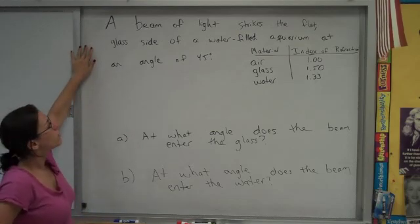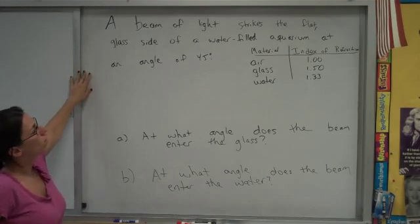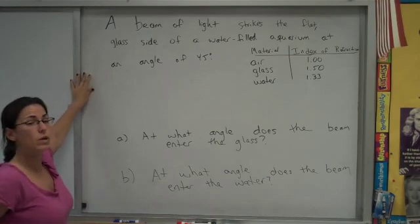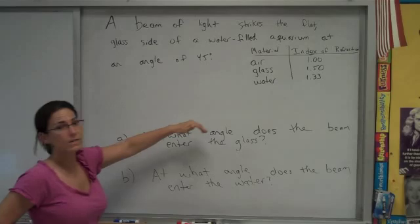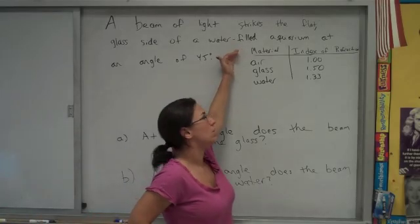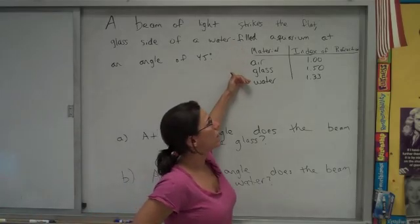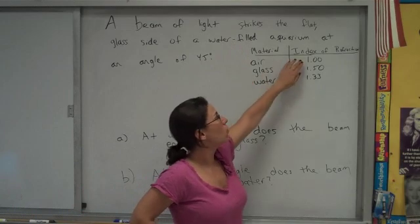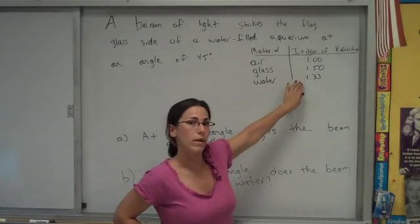A beam of light strikes the flat glass side of a water-filled aquarium at an angle of 45 degrees. We're also given that there are three materials involved: air, glass, and water, and their indices of refraction are 1, 1.5, and 1.33.